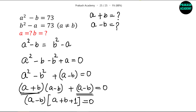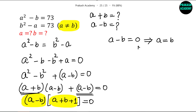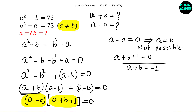This means either A minus B equals 0, or A plus B plus 1 equals 0. If A minus B equals 0, then A equals B — but the question states A is not equal to B, so this is not possible. Therefore the other factor must hold: A plus B plus 1 equals 0, which means A plus B equals minus 1.